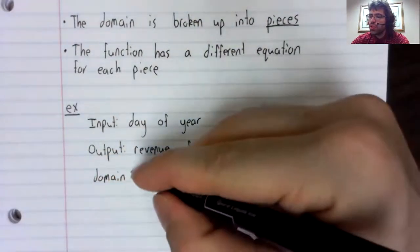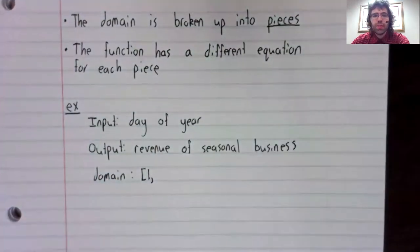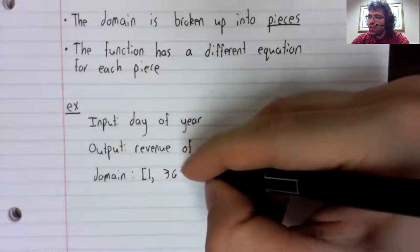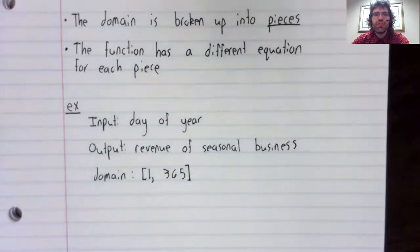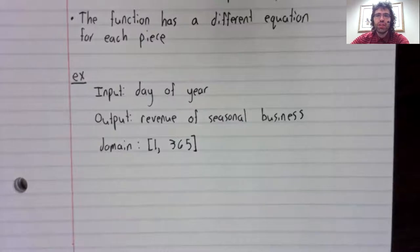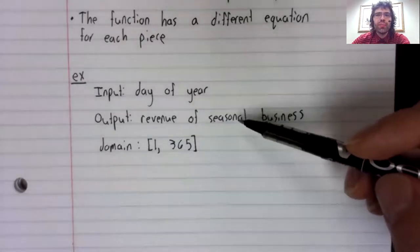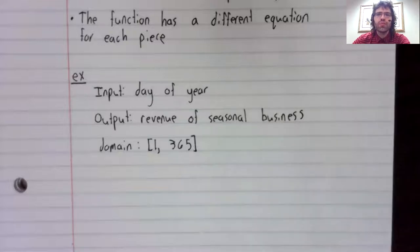So the domain will be from day one of the year to day 365 of the year. And when I say seasonal, I mean open in the summer; outside of summer months, it's closed.